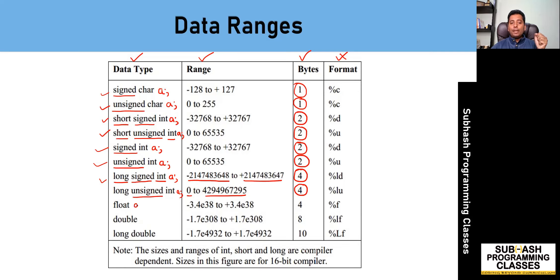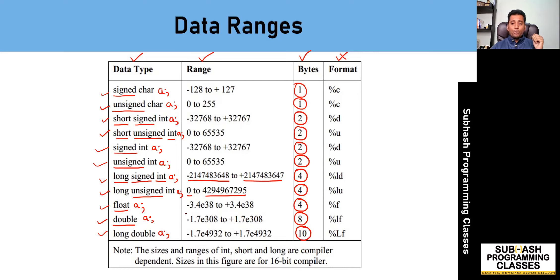For a float variable, the total memory allocated is four bytes, and there is a corresponding range of values. For a double variable, the memory allocated is eight bytes, and the range of values goes from minus 1.7 times 10 to the power 308 up to the equivalent positive value. For long double, the memory allocated is 10 bytes, and the range of values extends up to 10 to the power 4932.